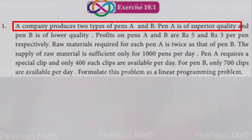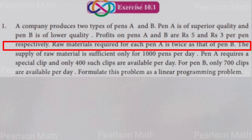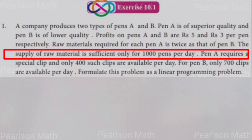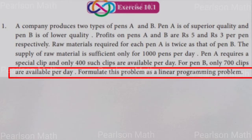A company produces two types of pens A and B. Pen A is superior quality and pen B is lower quality. Profits on pens A and B are rupees 5 and 3 per pen respectively. Raw materials required for each pen A is twice as that of pen B. The supply of raw material is sufficient only for 1000 pens per day. Pen A requires a special grip and only 400 clips are available per day. For pen B, only 700 clips are available per day.